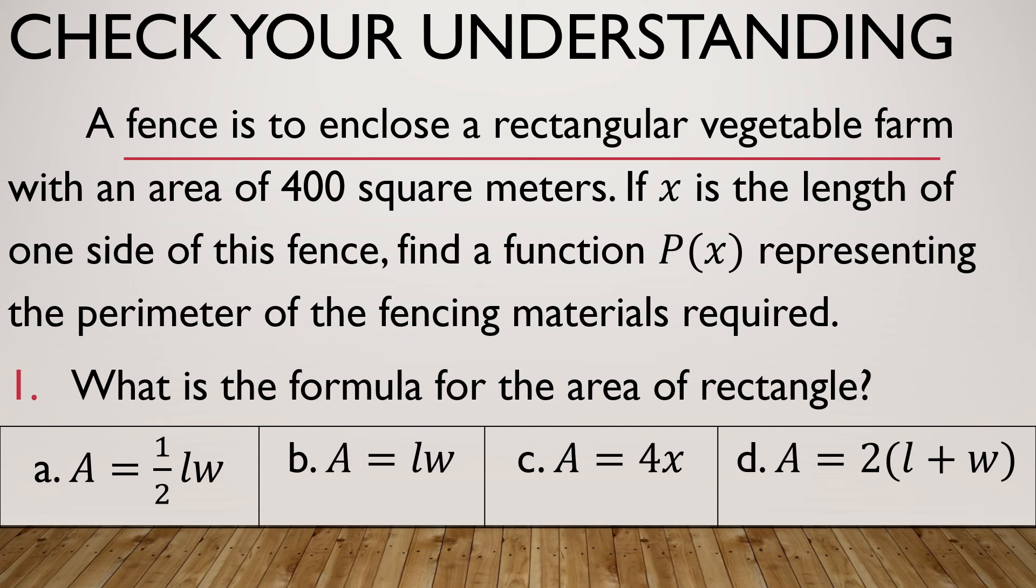Now, it is for you to use the function to compute for the value of c(t). Now, this one will be given in your learning activity sheet. And I'm not going to discuss this anymore. A fence is to enclose a rectangular vegetable farm with an area of 400 square meters. If x is the length of one side of this fence, find a function P(x) representing the perimeter of the fencing materials required.